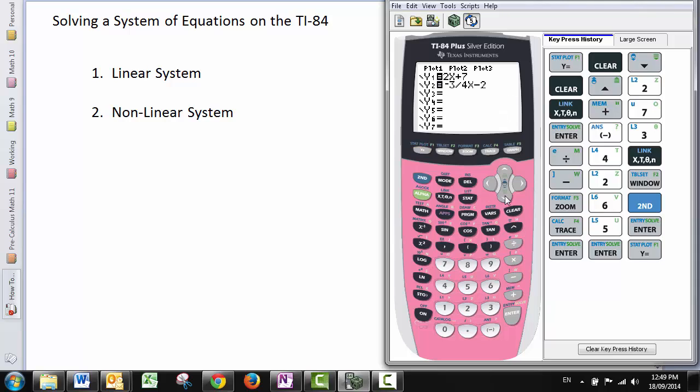If we had a third linear equation in here, let's say we had y equals 6x minus 5.